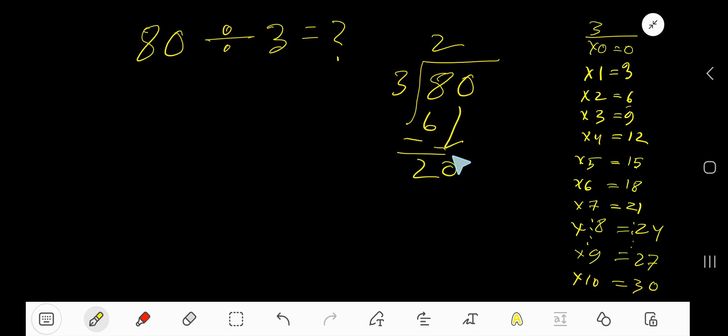Bring down next 0. 3 goes into 20. How many times? 7 times 21, which is greater. So 6 times. So 6 times 3, 18. Subtract 2. So 26. Remainder 2 is our answer.